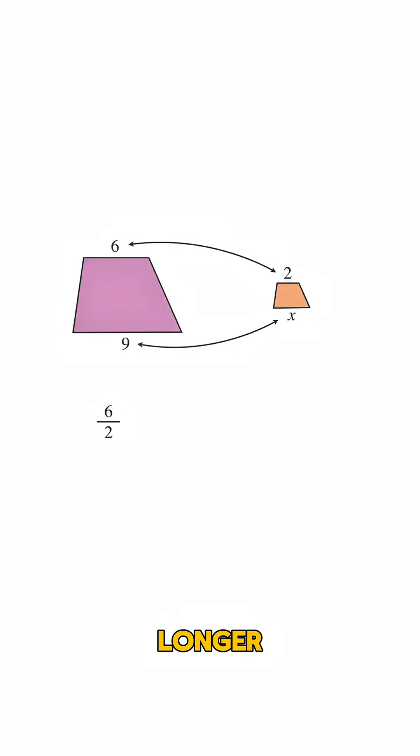you'll see that this side is 3 times longer than this side. Now because these shapes are similar, this ratio of 6 over 2 should be equal to the length of this side, 9, divided by the length of this side, X.